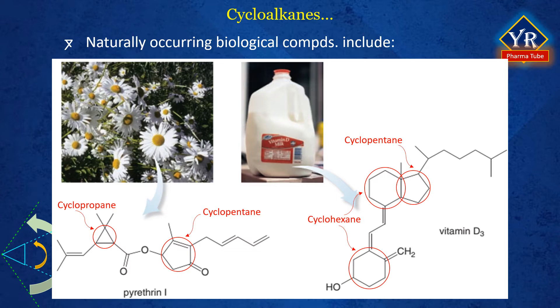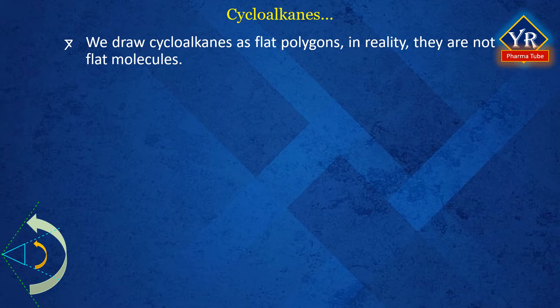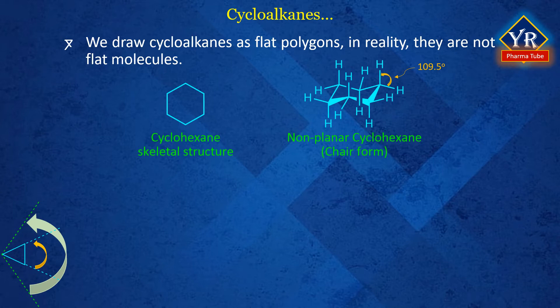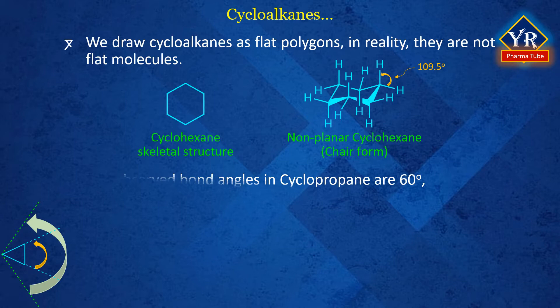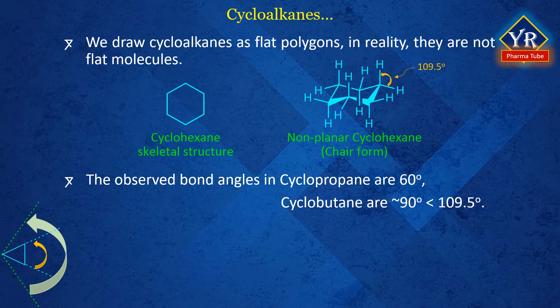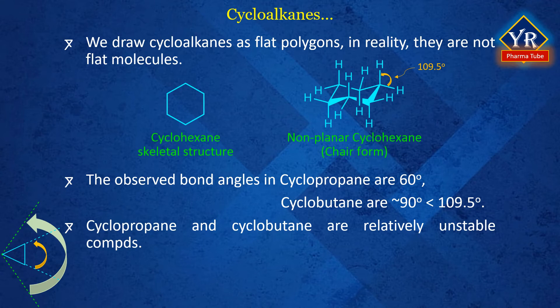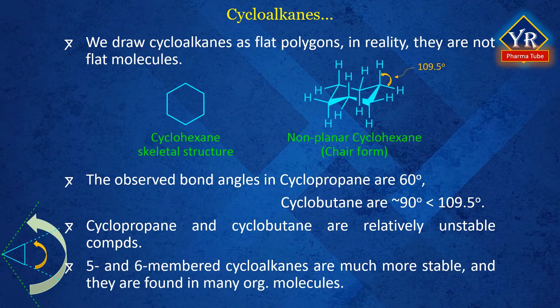Although we draw cycloalkanes as flat polygons, in reality cycloalkanes with more than three carbon atoms are not planar molecules. Cyclohexane, for example, adopts a puckered arrangement called the chair form, in which all bond angles are 109.5 degrees. The observed bond angles in cyclopropane are 60 degrees and those in cyclobutane are approximately 90 degrees — values considerably smaller than the 109.5 degrees associated with a tetrahedral arrangement. Consequently, cyclopropane and cyclobutane are relatively unstable compounds. Five and six-membered cycloalkane structures are much more stable.